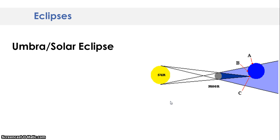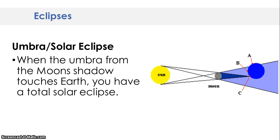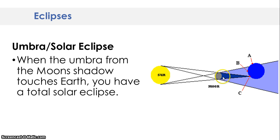Now we're going to talk about the umbra during a solar eclipse, and then the umbra during a lunar eclipse. You don't need to write anything in your notes; I just want to explain and look at the diagram. When the umbra from the moon's shadow touches Earth, you have a total solar eclipse. Here's our light source, the sun, casting light onto the moon. This darkest part — the umbra — is going to cast a shadow on the Earth. This is exactly what's going to happen to us August 21st when we experience a total solar eclipse. This region is going to experience a total solar eclipse because it is in the darkest part of the moon's shadow.